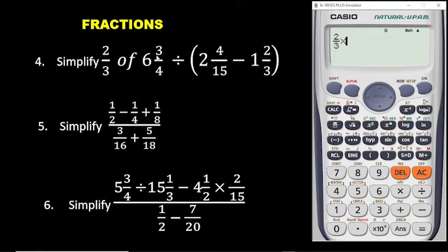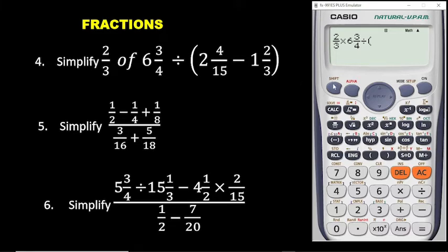And then we have 6 whole number 3 over 4. This is a mixed number. So you press shift and then press the fraction button. We have 6 whole number — with the arrow going up, you only enter 3, then go down and enter 4. Once again, press the right arrow to move the cursor up. Then we have divided by. Now we have a bracket — let's bring the brackets. After the bracket, we have the mixed number 2 whole number 4 over 15. To get the mixed number, press shift and then press the fraction button. We have 2 whole number, then with the right arrow you go up, and we have 4 divided by 15 — that's 1, 5.